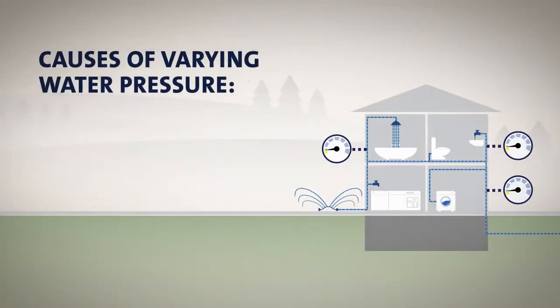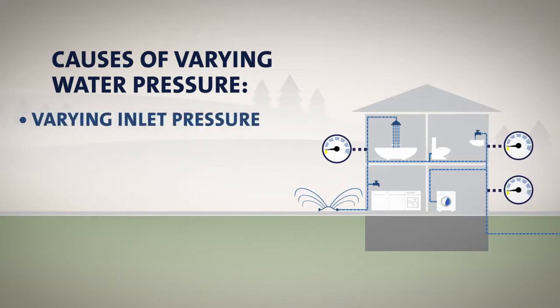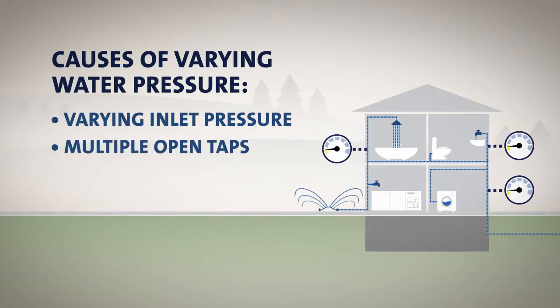There are two main causes of varying water pressure: varying inlet pressure and multiple open taps. Let us start with the inlet pressure.